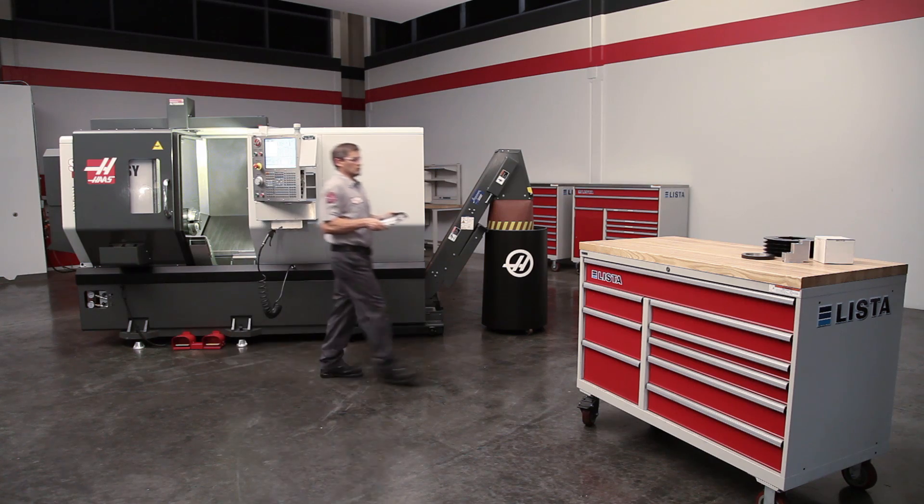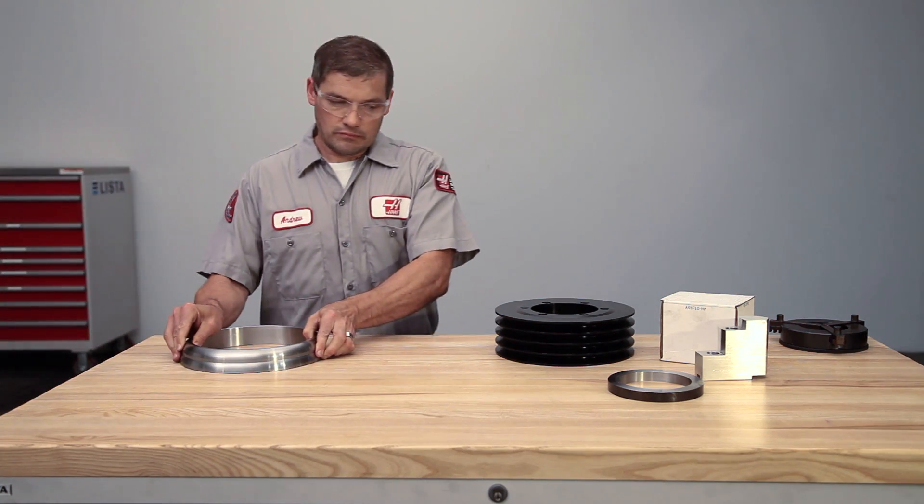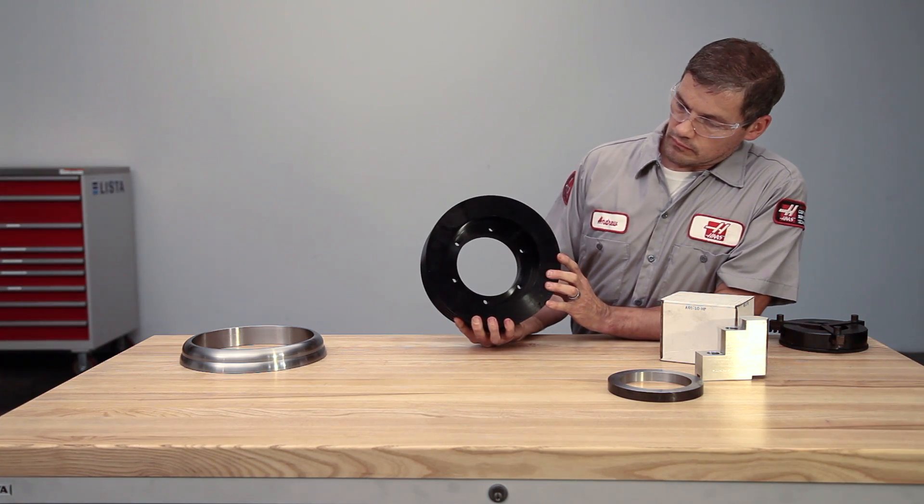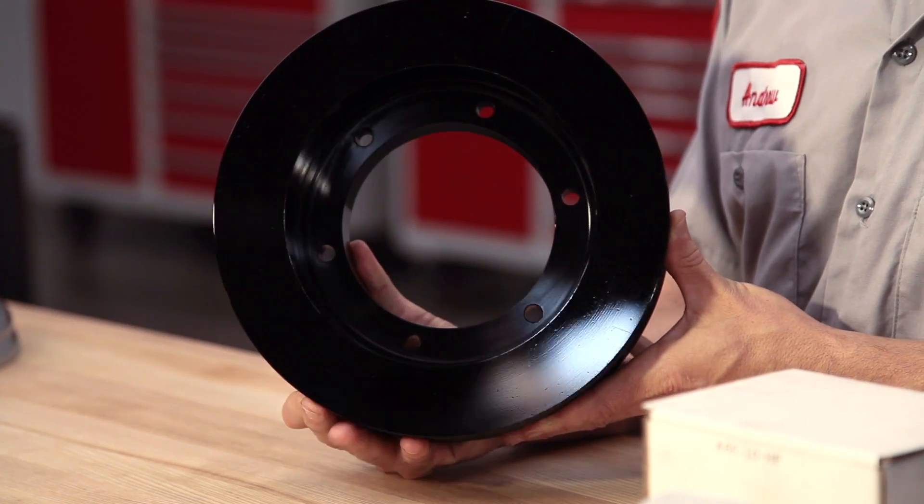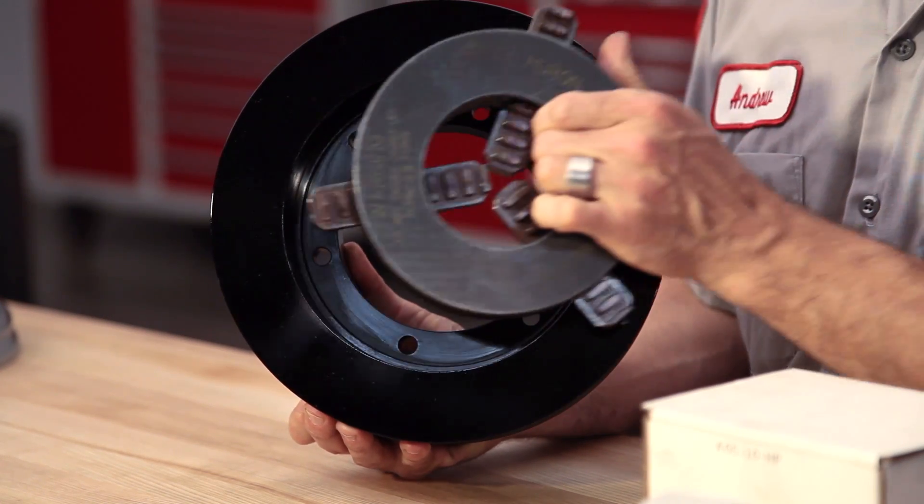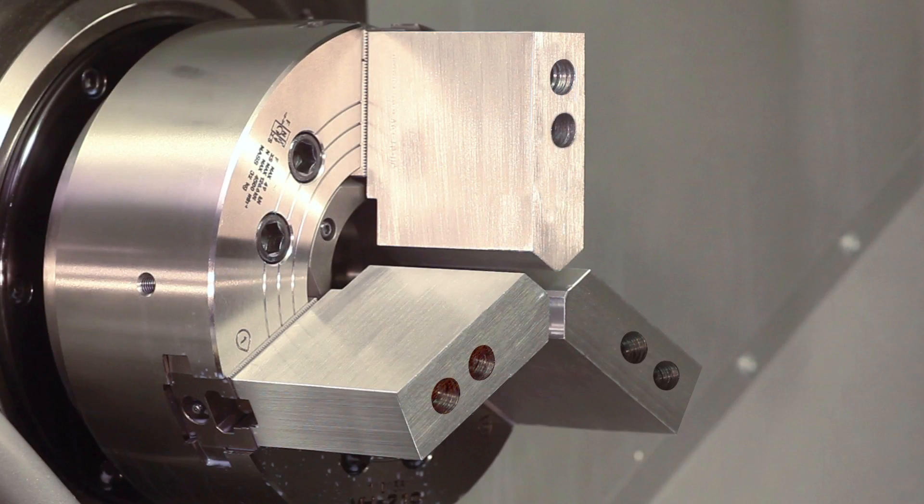Here is another example of a part that we want to ID grip. This pulley has sufficient wall thickness to allow us to use standard soft jaws. However, the part's inside diameter bore, which we want to grip, is so small that neither of our boring rings will fit inside of our cutting path.